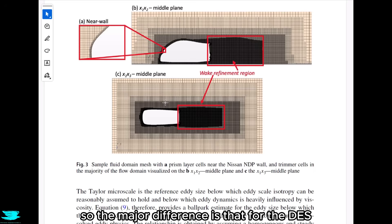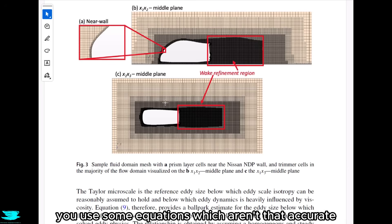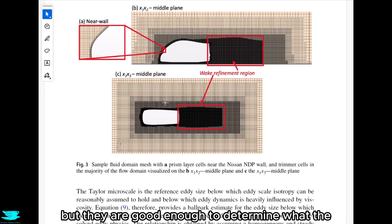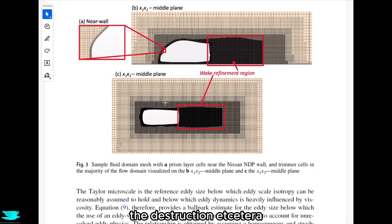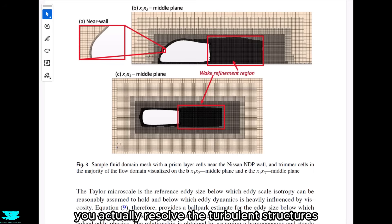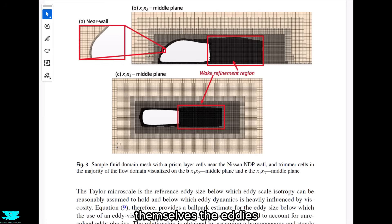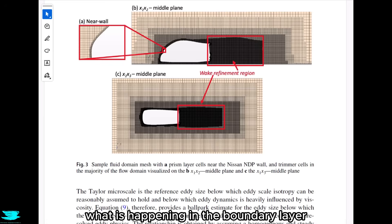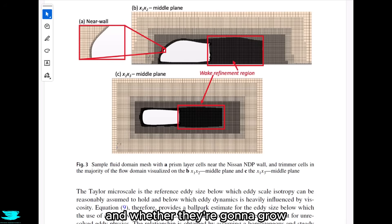The major difference is that for DES, you use the RANS approach to model the turbulence near the wall — some equations that aren't perfectly accurate but are good enough to determine what the turbulence is doing: the production, the destruction, etc. In the WRLEs approach, you actually resolve the turbulent structures themselves, the eddies — directly figuring out what is happening in the boundary layer, all these little turbulent structures, and whether they're going to grow or die out.